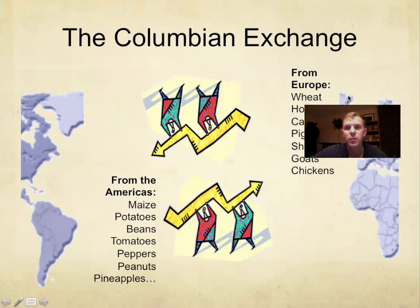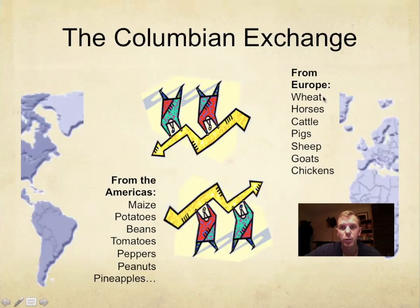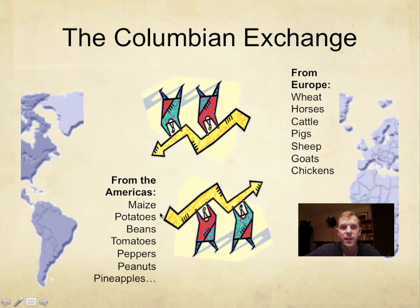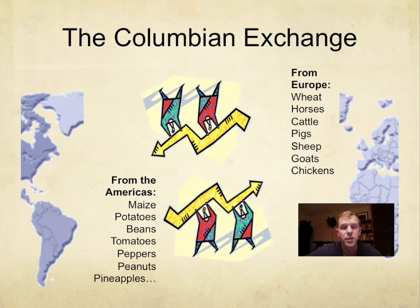What was exchanged from where to where? From Europe: wheat, horses, cattle, pigs, sheep, goats, and chickens. From the Americas: maize (corn), potatoes, beans, tomatoes, peppers, peanuts, and pineapples — a lot of food being exchanged. That is one reason why world population increased, because there was much greater availability and access to food.